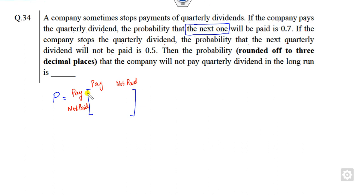The probability that next day will be paid. So pay and the paid, that is my 0.7. Next line is, if the company stops, that is it's not paid.